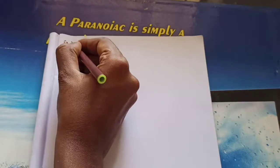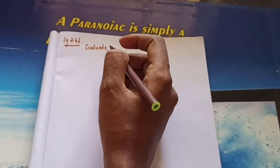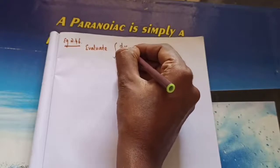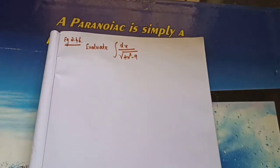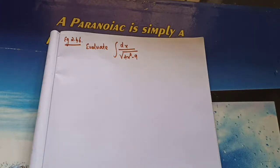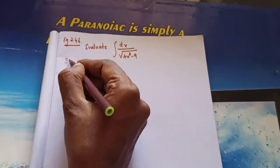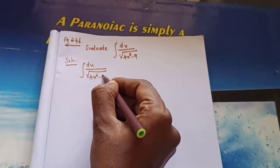Example 2.46: Evaluate integral of dx divided by √(4x² minus 9). So dx divided by √(4x² minus 9). In the denominator we need to write it in the form of √(x² minus a²). So we need to take the 4 outside.